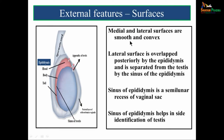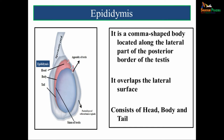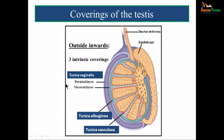There are two surfaces: medial and lateral, both smooth and convex. The lateral surface is overlapped posteriorly by the epididymis and is separated from the testis by a small slit-like gap called the sinus of the epididymis. The sinus of epididymis is a semilunar recess of the vaginal sac and helps in side identification of the testis. The epididymis is a comma-shaped body located along the lateral part of the posterior border of the testis, consisting of three parts: the head, body and tail.